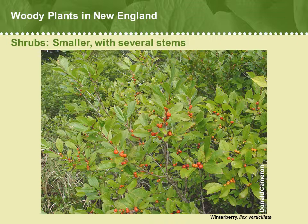Shrubs are generally smaller than mature trees, usually only reaching 20 to 30 feet in height, max. Of course, young trees or saplings can start out smaller than your average shrub, so it's important to look at the growth form of the plant. Shrubs usually have several stems that originate from the base of the plant, whereas trees tend to have one main trunk.